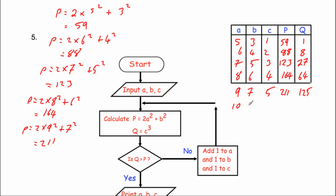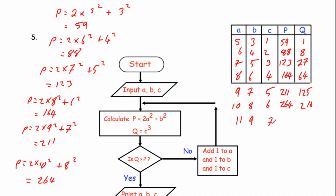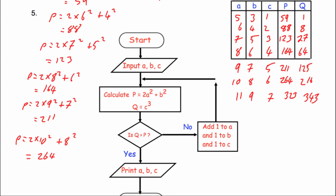Q equals 6 cubed equals 216. P equals 2 times 10 squared plus 8 squared equals 264. Is 216 bigger than 264? No — add one: A equals 11, B equals 9, C equals 7. Q equals 7 cubed equals 343. P equals 2 times 11 squared plus 9 squared equals 323. Is Q (343) bigger than P (323)? Yes — so we print A, B, and C. The answer is A equals 11, B equals 9, C equals 7.